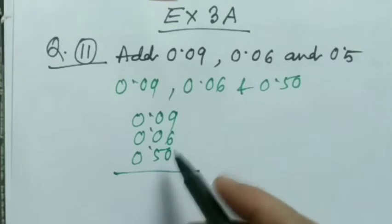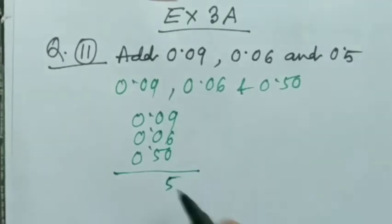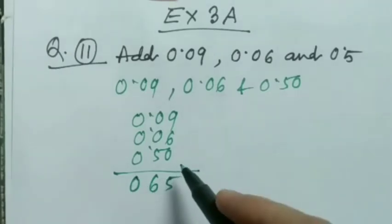Now we are writing: 9 plus 6 is 15, write 5 and carry 1. 0 plus 0 plus 1 is 1, then 0. And now we are putting this decimal point just below the decimal points here. So this is the answer: 0.65.